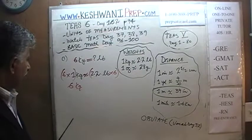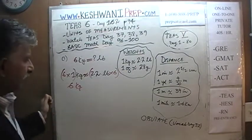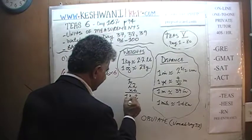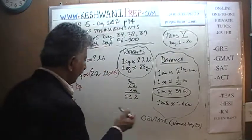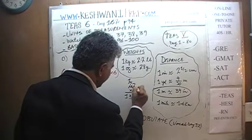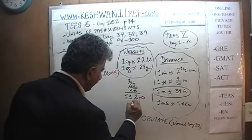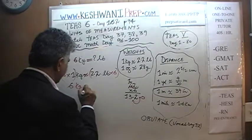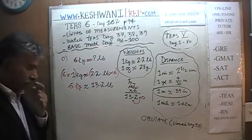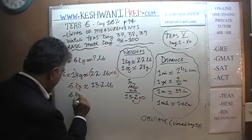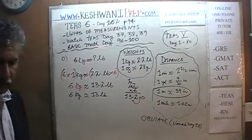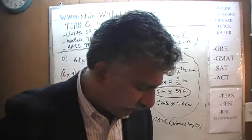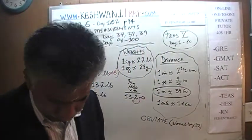Six kilograms is approximately six times 2.2. To calculate: 22 times 6 is 132; insert the decimal one place from the right and you get 13.2. So six kilograms is approximately 13.2 pounds. You can also say approximately 13 pounds — that's perfectly valid since we are doing approximation, not an exact conversion.